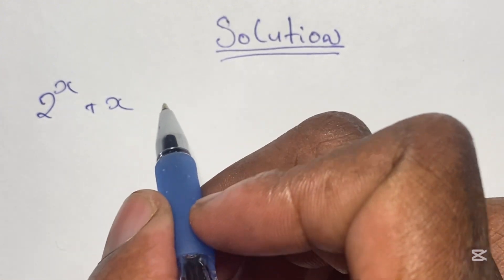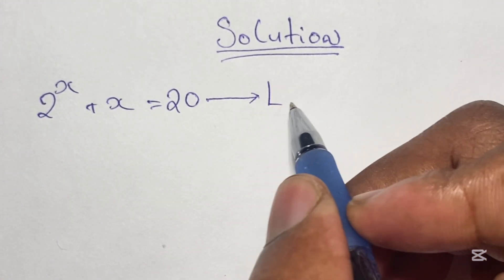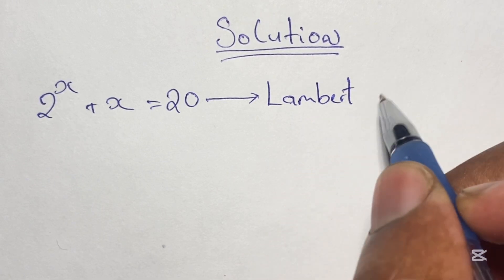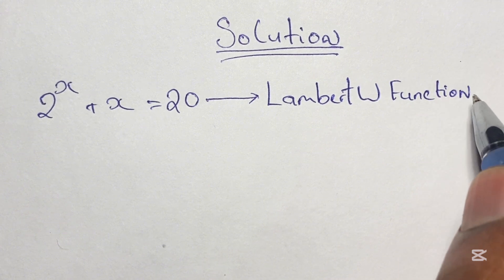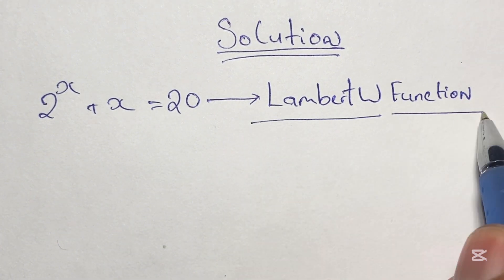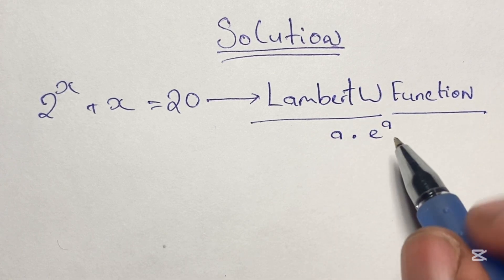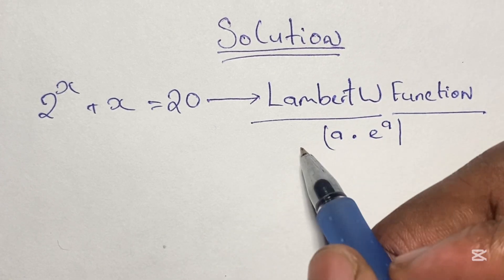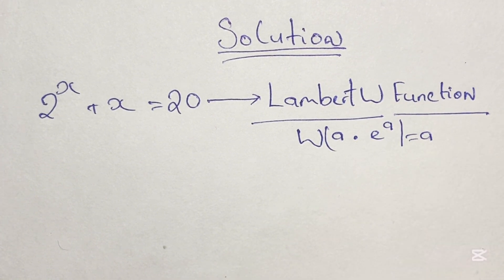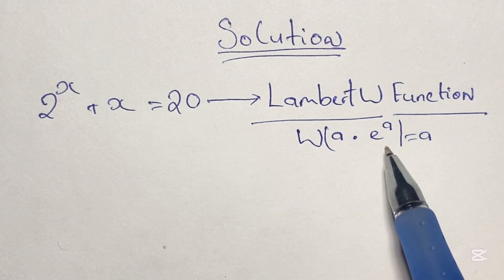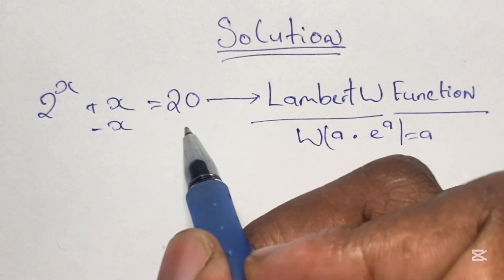To solve these kinds of equations, normally we wouldn't use regular algebraic methods to arrive at our solutions. So in this lesson I will introduce you to what we call the Lambert W function. This method is used to solve equations where the variable is in the base and also in the exponent. The way this works is that where we have an expression such as a times e to the power of a, if we apply the W function to this expression, the result is a. The idea here is to rewrite our equation to reflect this expression.